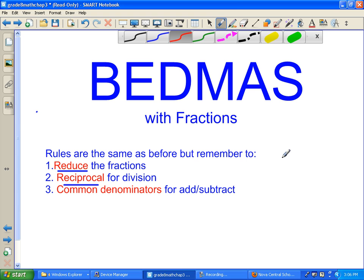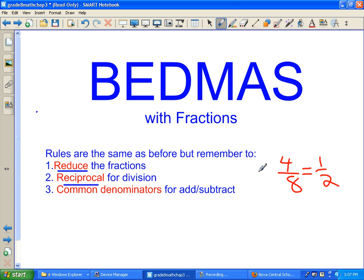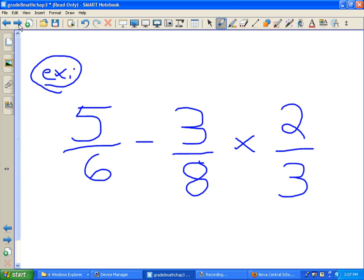That means if it's 4 over 8, you need to reduce it to 1 half. You need to do a reciprocal for division, in other words, flip it around. And you need to find common denominators for when you're adding or subtracting, same as what you learned in the previous lessons.